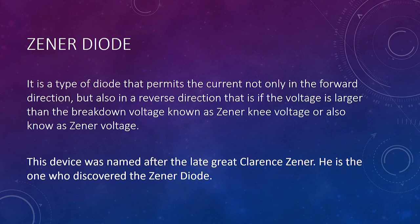First, let's talk about the Zener diode. It's a type of diode that permits current not only in the forward direction, but also in the reverse direction, if the voltage is larger than the breakdown voltage, known as the Zener knee voltage, or also known as the Zener voltage. This device was named after Clarence Zener, who discovered the Zener diode.